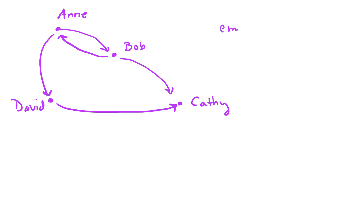In this network we have Ann, and Ann writes emails to Bob, and Bob writes emails back to Ann. Similarly, Bob writes an email to Kathy, Ann writes an email to David, and David writes an email to Kathy. But notice that there's no arrows coming out of Kathy — in other words, Kathy does not write any emails.